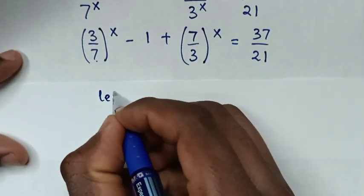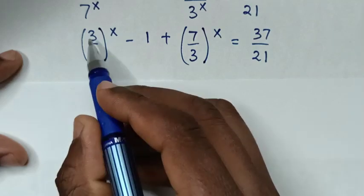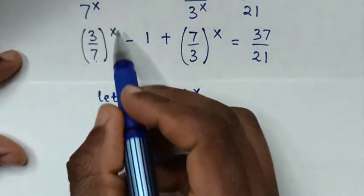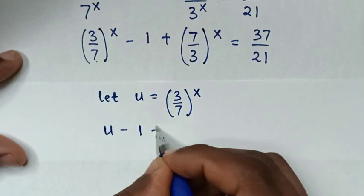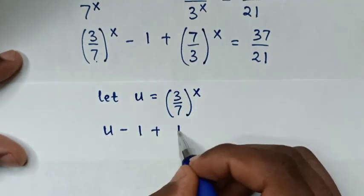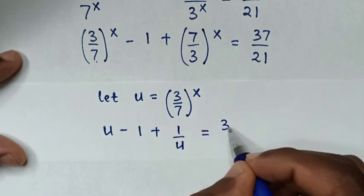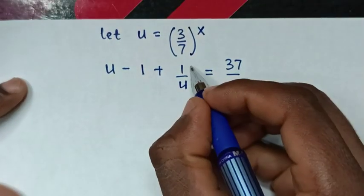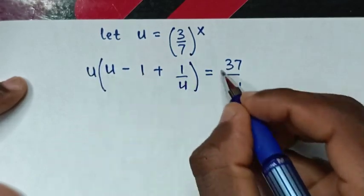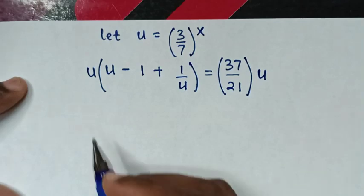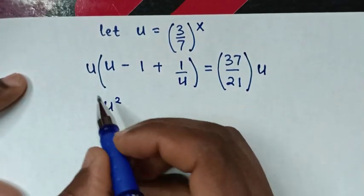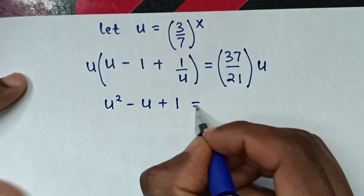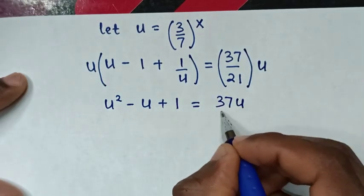Then we let u equal to (3/7)^x. Then plus (7/3)^x, which will be 1 over u. So the equation becomes u minus 1 plus 1/u is equal to 37 over 21. To remove the denominator of u, we multiply by u on both sides. So this and this cancel. It becomes u squared, then u times negative 1 is negative u, plus u times 1/u is 1, is equal to 37u over 21.